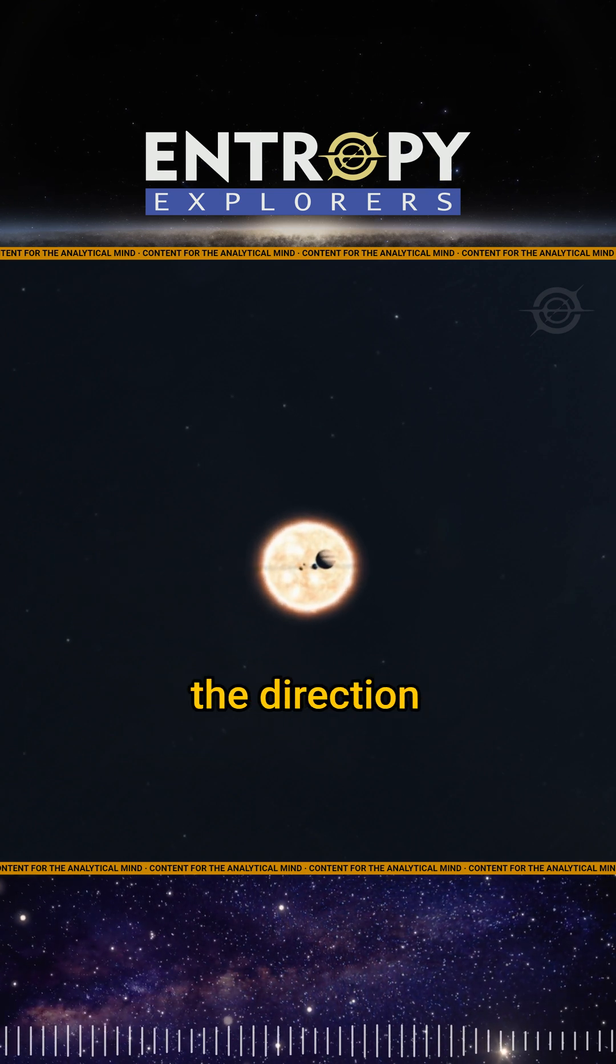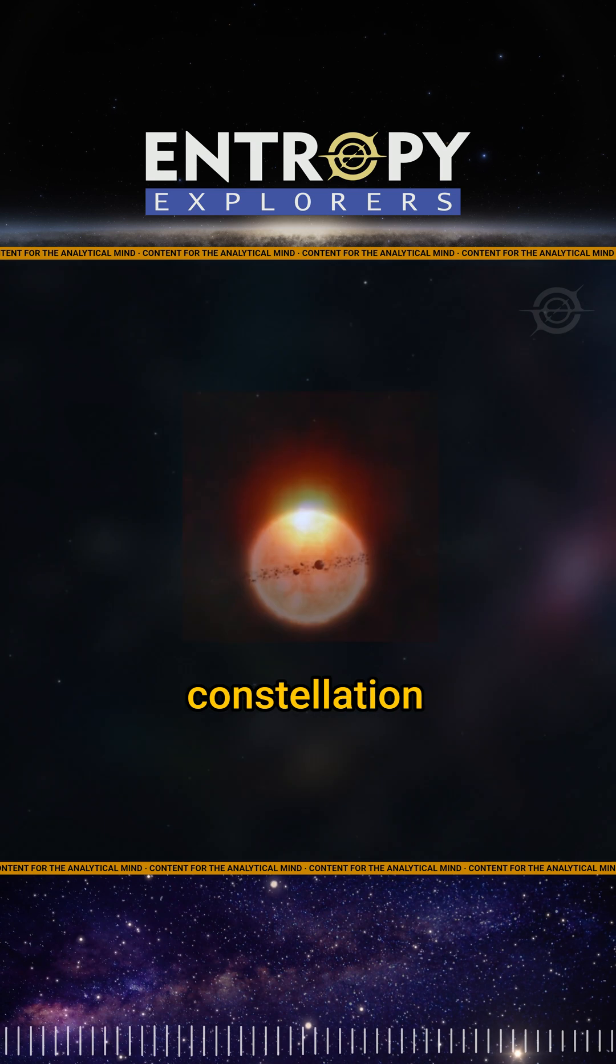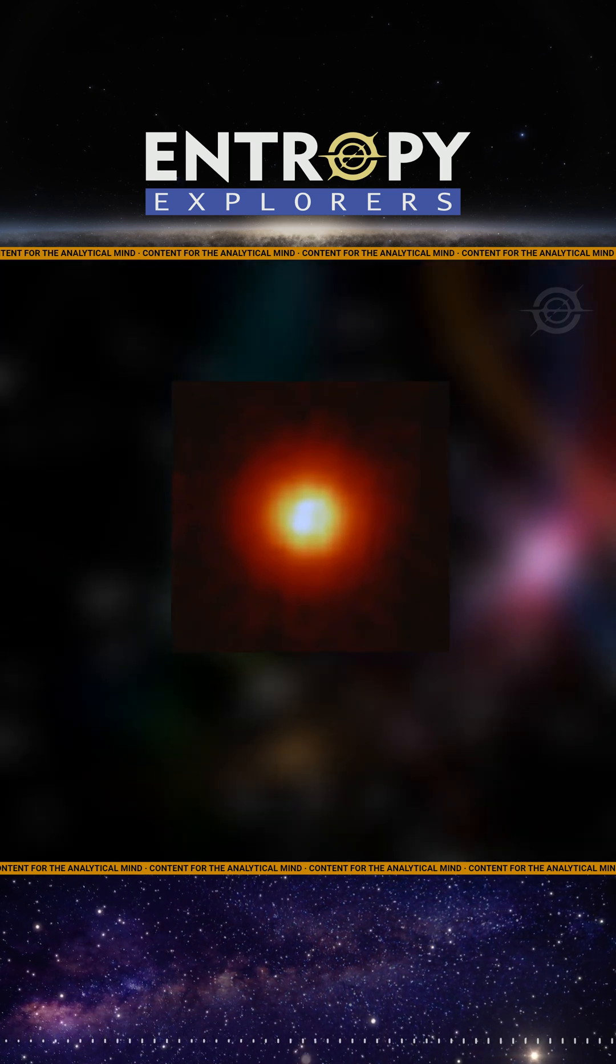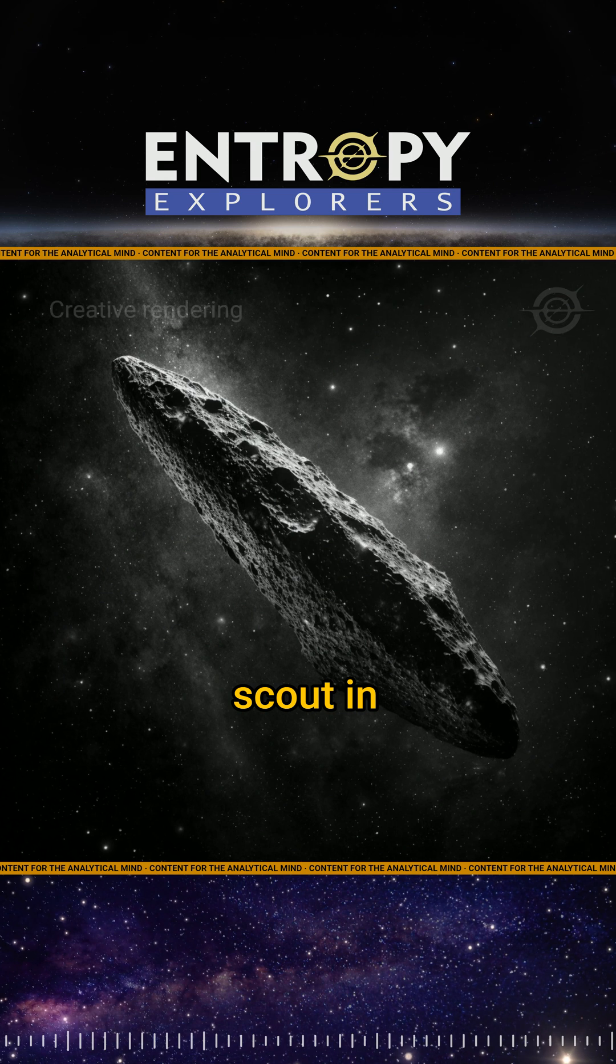And it is estimated to have come from the direction of Vega, a star in the constellation Lyra. It was named Oumuamua, which means scout in Hawaiian.